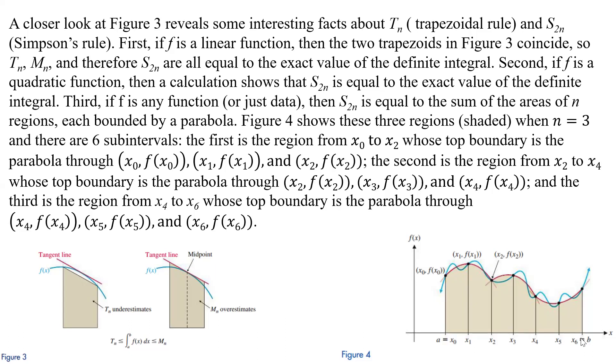And then the second one is going to be from X2 to X4, and similarly we have X2, the X3, X4, and then here we have a concave up, and we have the 4, the 5, and the 6.